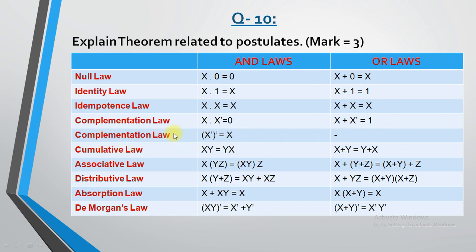Next is also called complementation law: x-dash whole dash. When there is a double dash, the two dashes cancel and it becomes the value itself. For example, if x-dash is 0, the complement of 0 is 1, so x-dash-dash equals x. So when there is a double complement, the value returns to the original variable. There is no OR law for this because it involves a single variable.